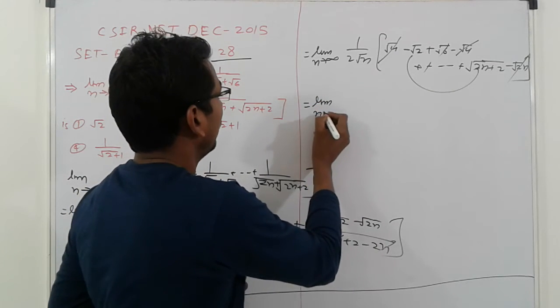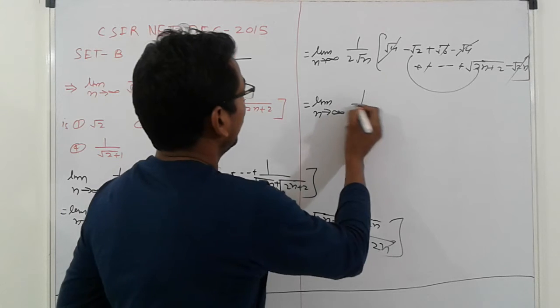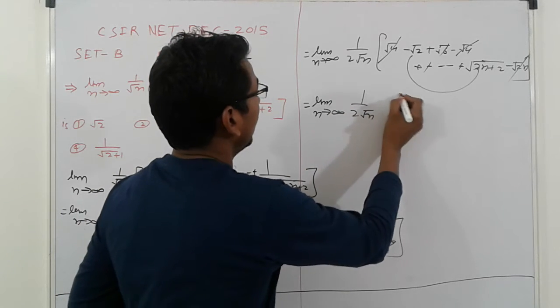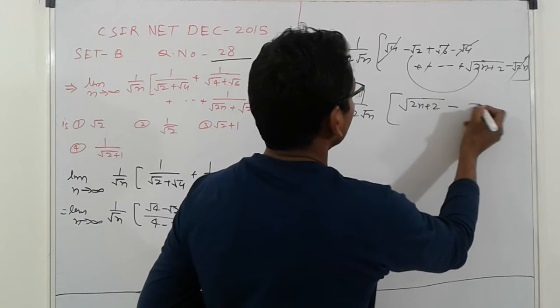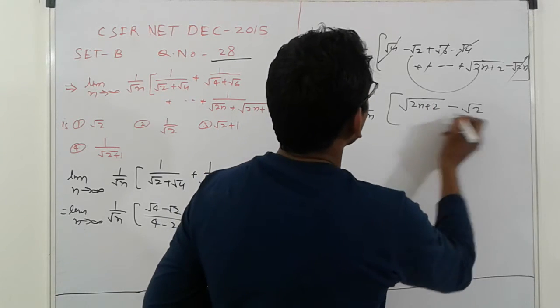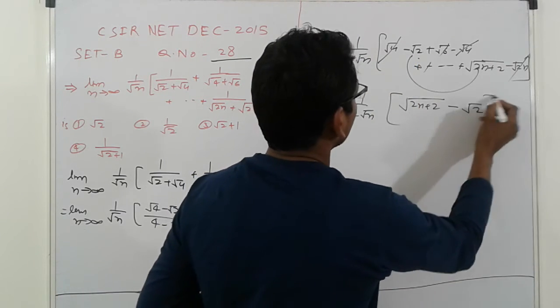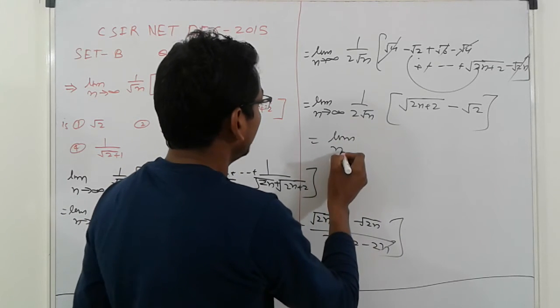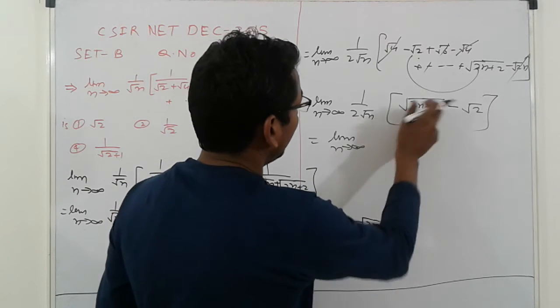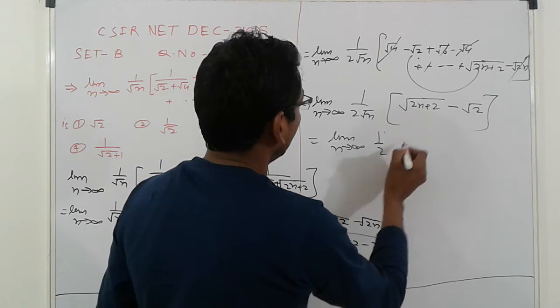So limit of n tending to infinity, 1 upon 2 under root n. And here, under root 2n plus 2 minus under root 2. So put the limits. Limit n tending to infinity. Root n divided by root n. So 1 by 2.